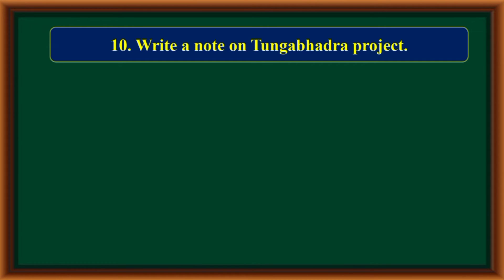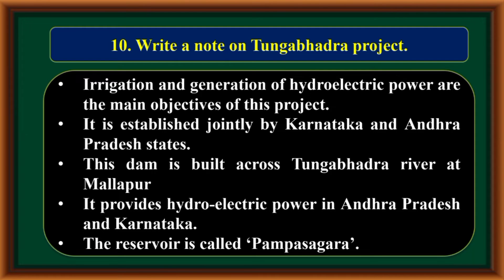Write a note on Tungabhadra Project. Irrigation and generation of hydroelectric power are the main objectives. It is established jointly by Karnataka and Andhra Pradesh. The dam is built across the Tungabhadra River at Mallapur. It provides hydroelectric power to Andhra Pradesh and Karnataka. The reservoir is called Pampa Sagar.